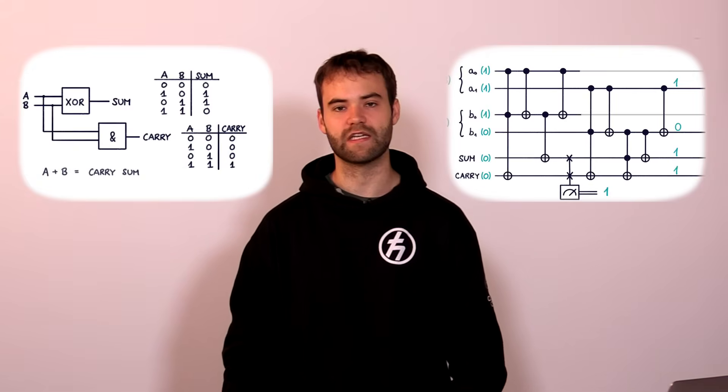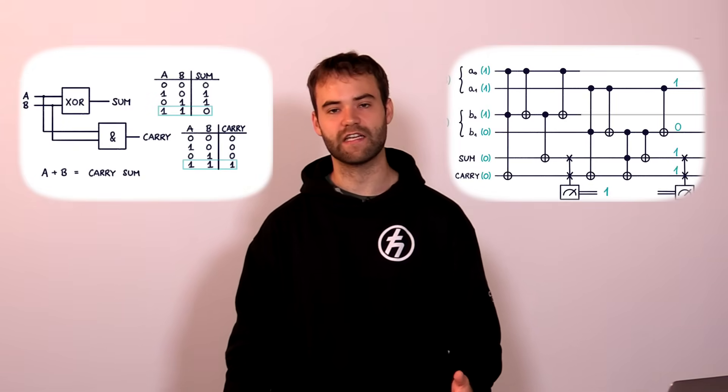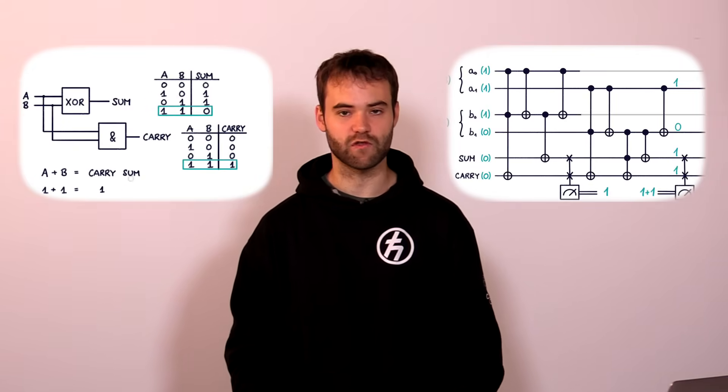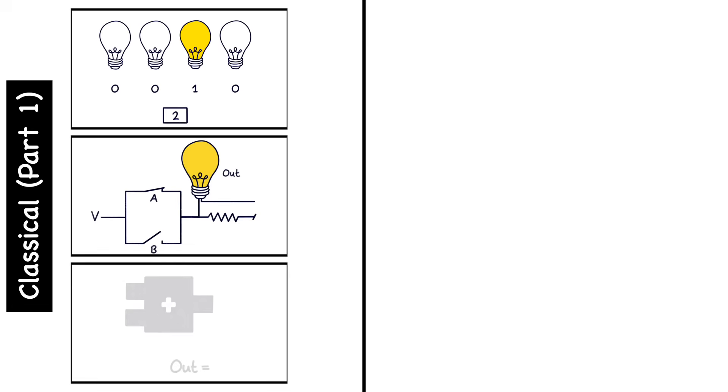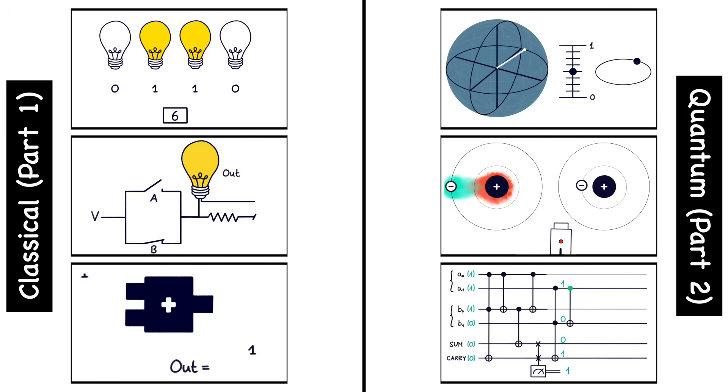This video demonstrates the differences between classical and quantum computing by examining how these architectures perform the simple summation of two integers. We'll first look at how logical gates are electronically constructed in classical hardware and then combined to form a full adder unit. Afterwards we'll build the same unit using quantum hardware.